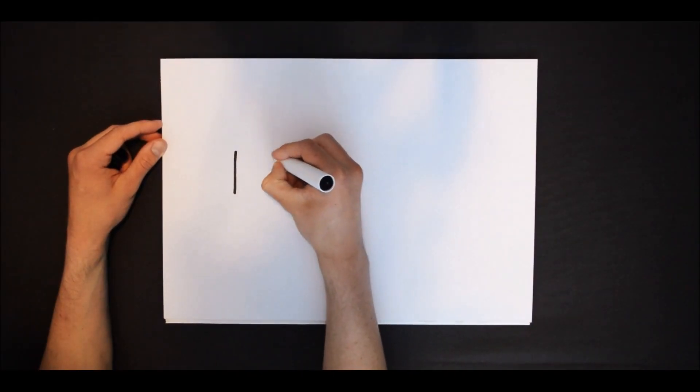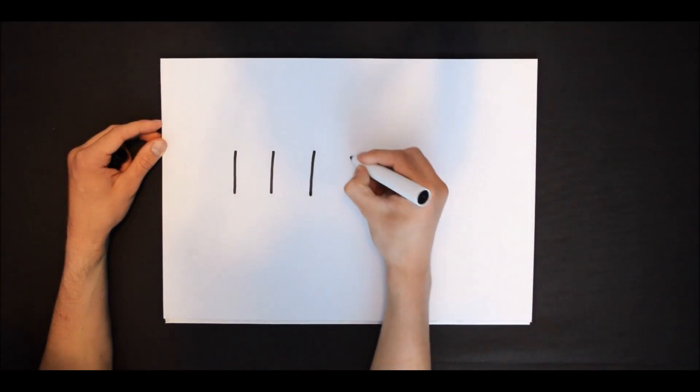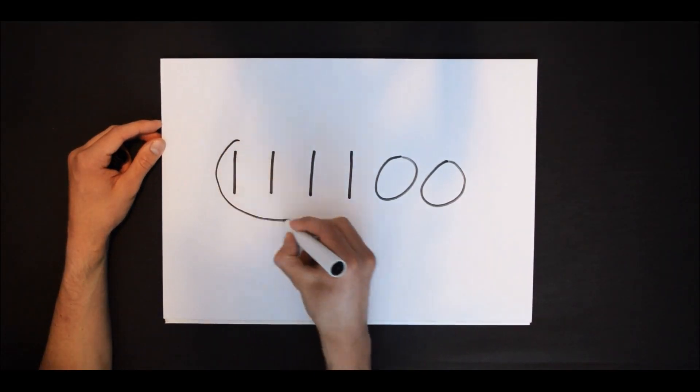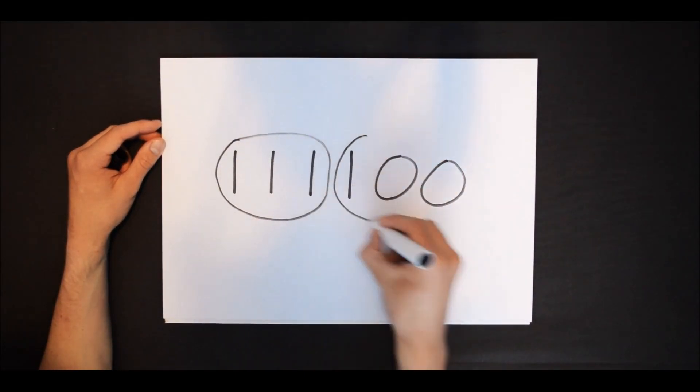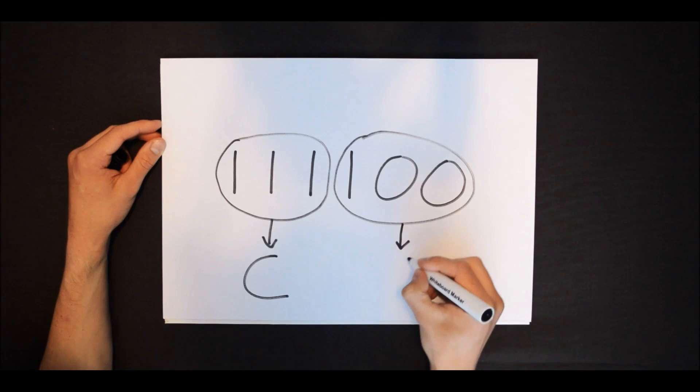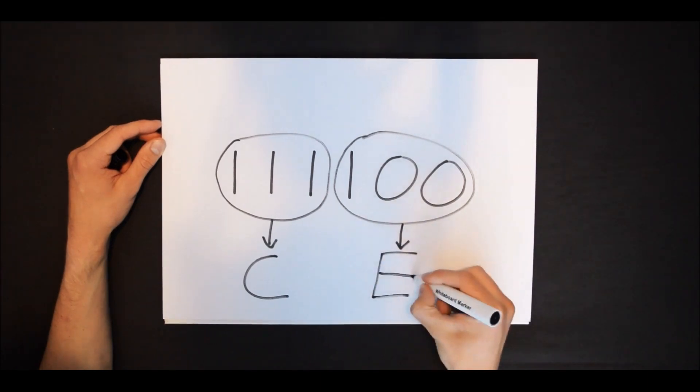So let's do another example. Let's say you have the number 111100. If you refer to the list that I've now put in the description, you'll see that you end up with CE.